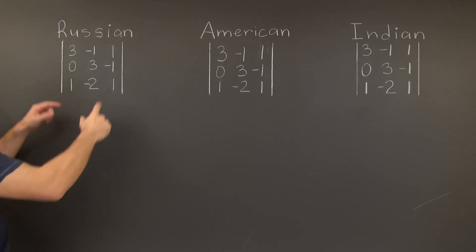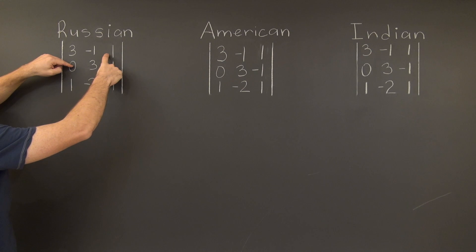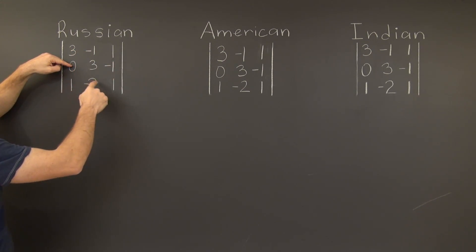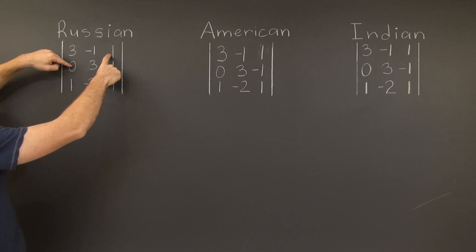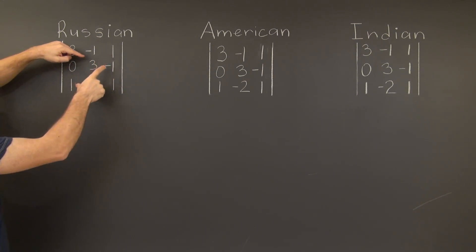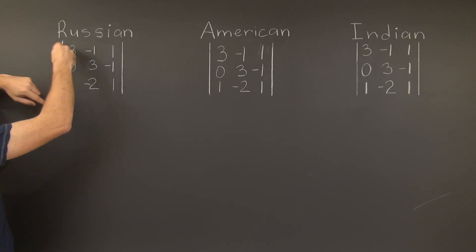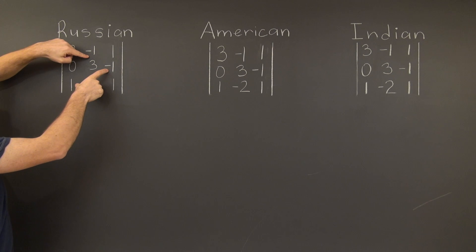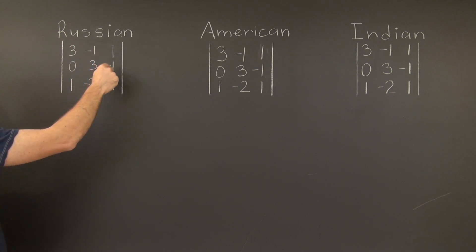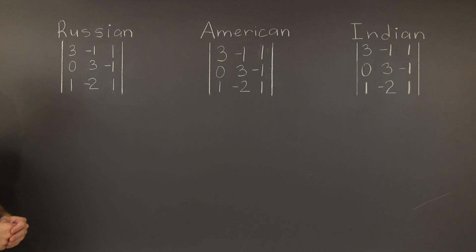The second term comes from this triangle with a side parallel to the main diagonal right here and this triangle will contribute 0. The final positive term comes from this triangle which also has a base parallel to the main diagonal and this term will contribute negative 1 times negative 1 times 1. So the contributions from the positive terms are 9, 1 and 1.